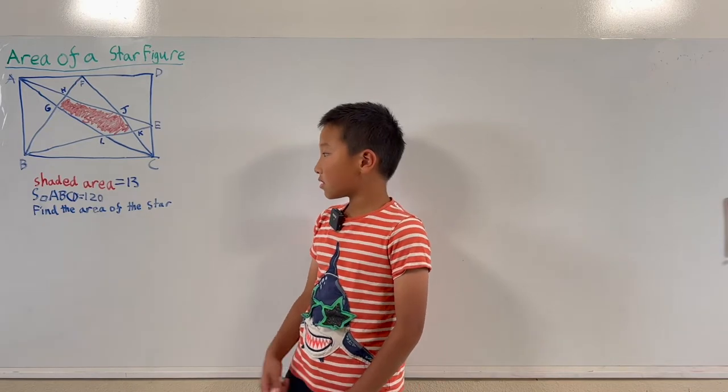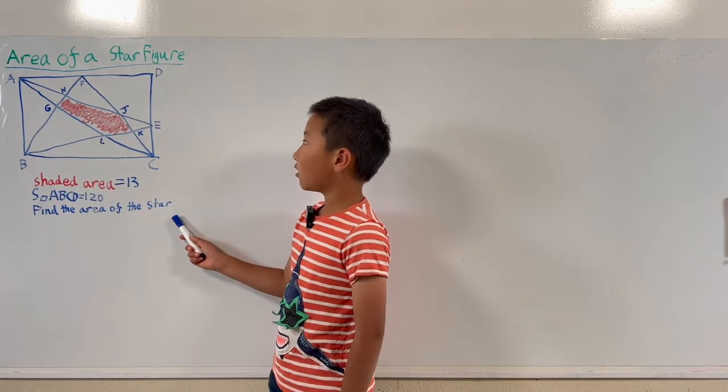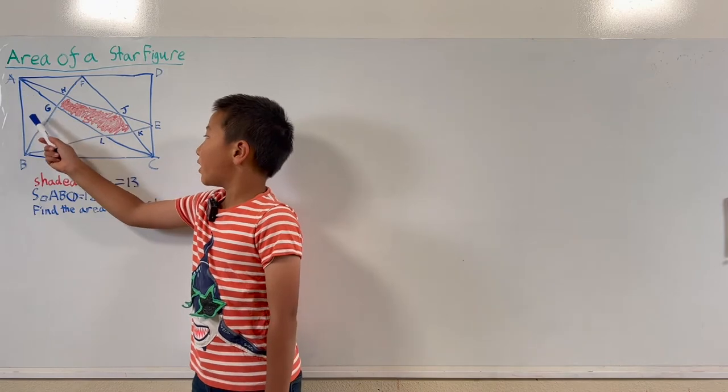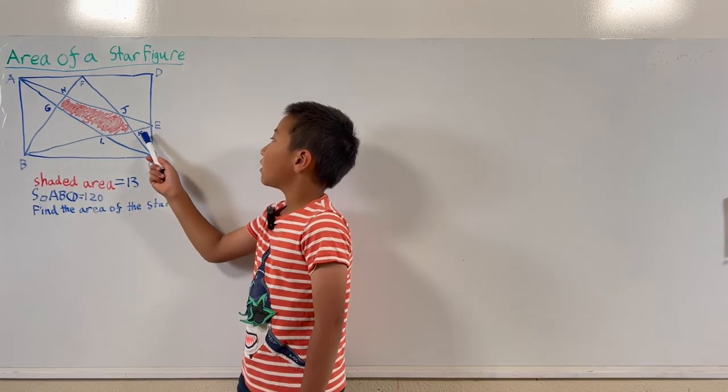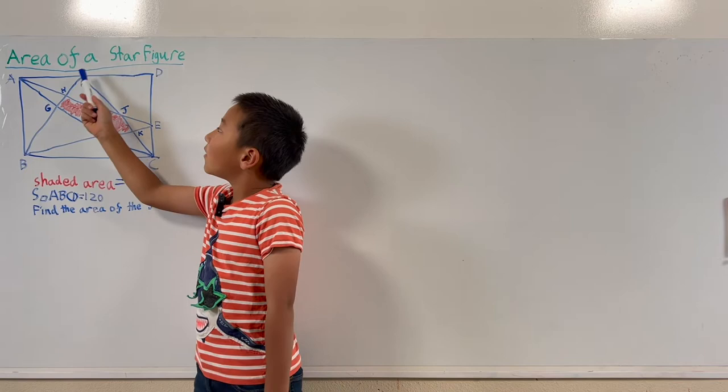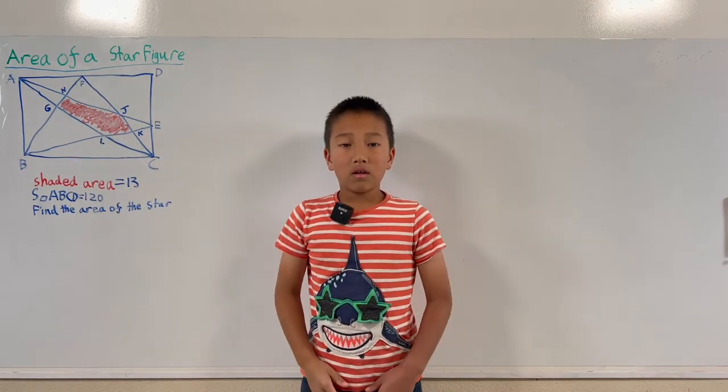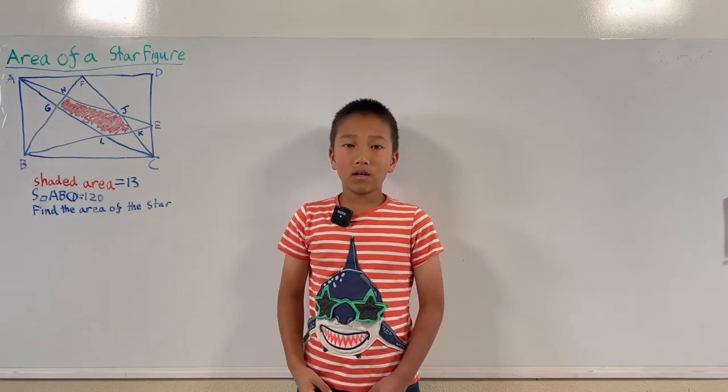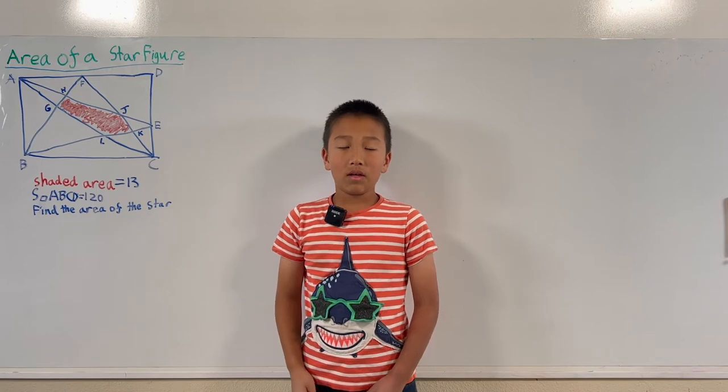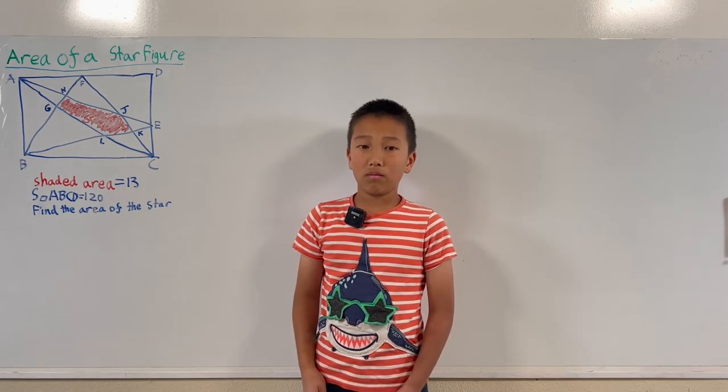It asks us to find the area of the star which is AGBLCKEJFH. That seems very complicated. It might seem like we can't do this with this much information. It's not actually that hard.